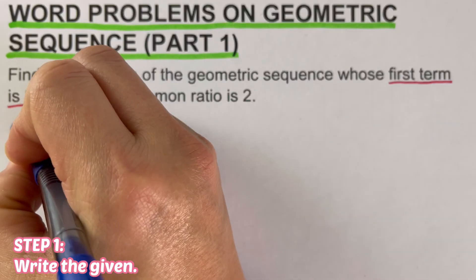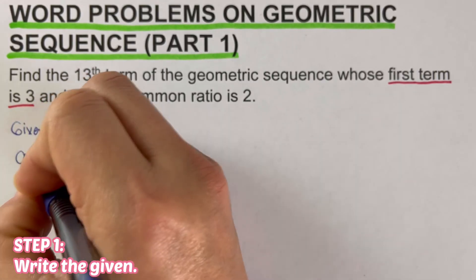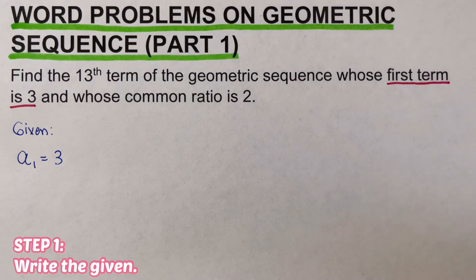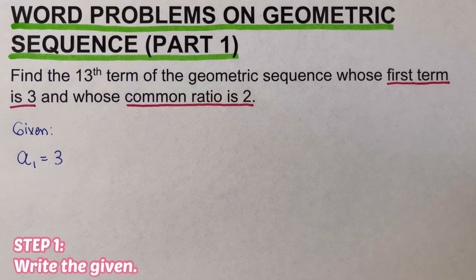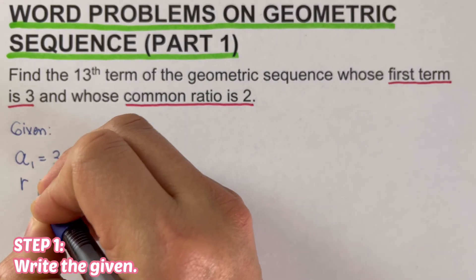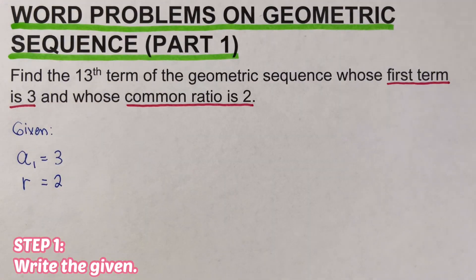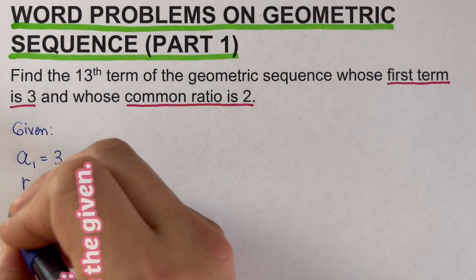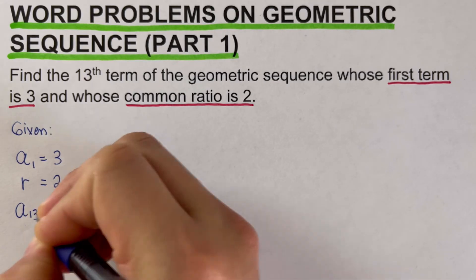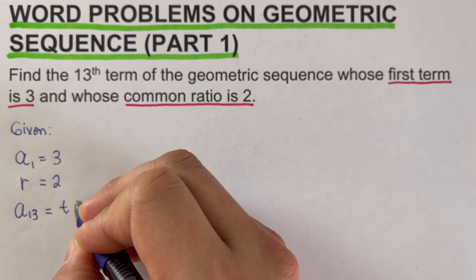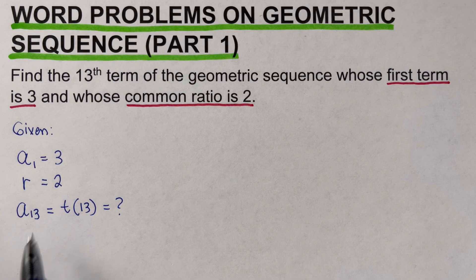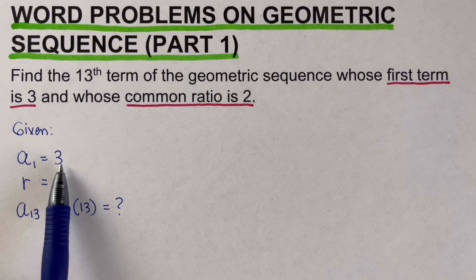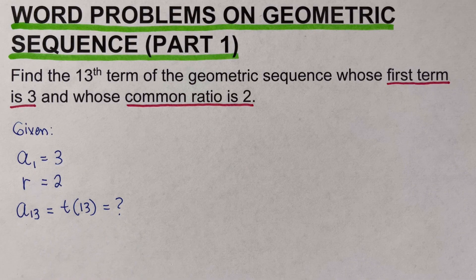The first term is 3, represented as a sub 1, so a sub 1 equals 3. We also have the common ratio, which is 2, so r equals 2. We are looking for the 13th term, which can be represented as a sub 13 or t of 13 — both notations mean the same thing.